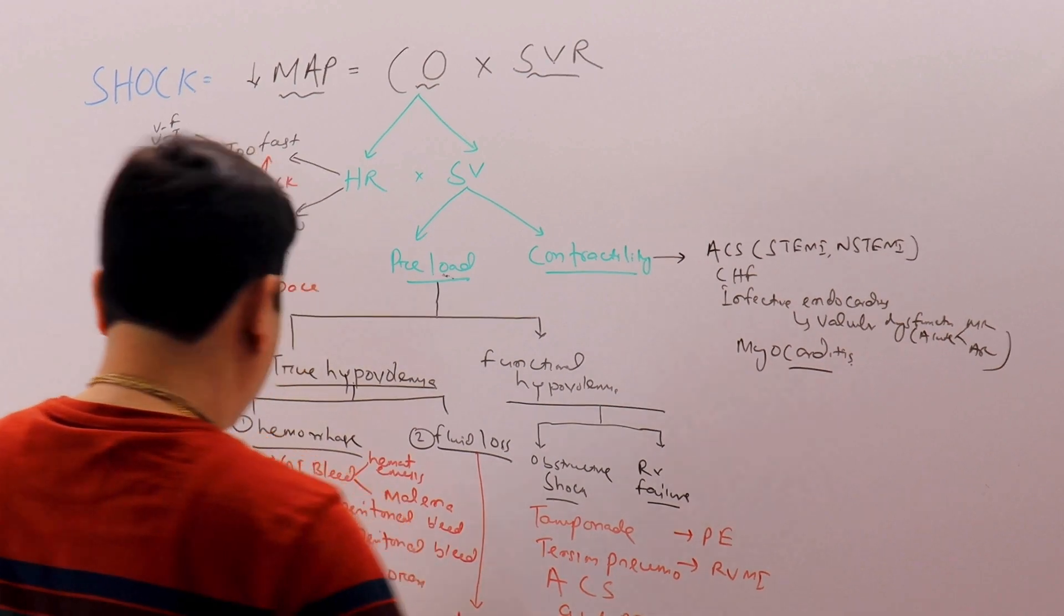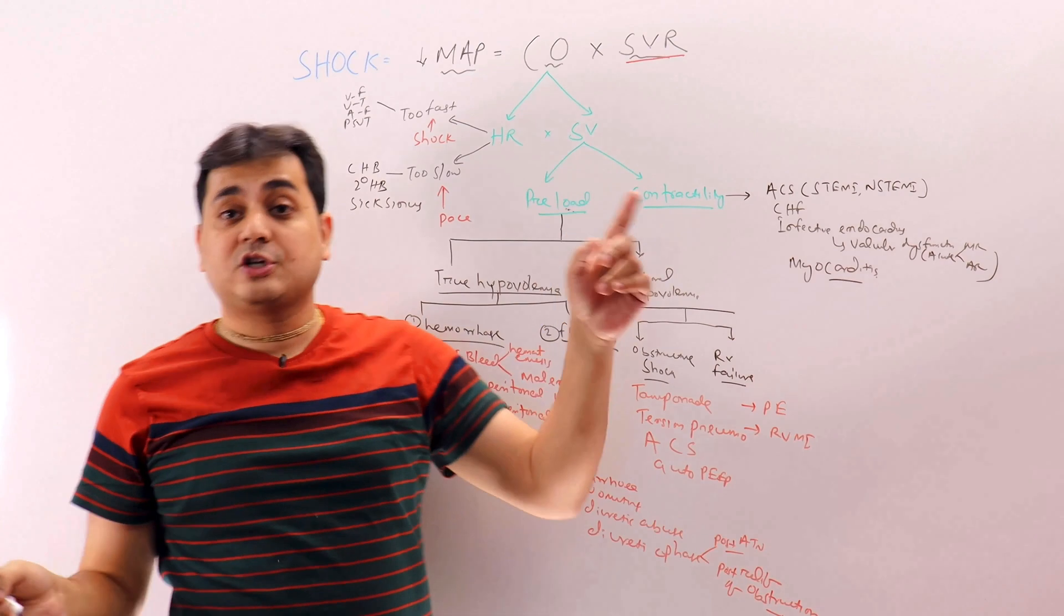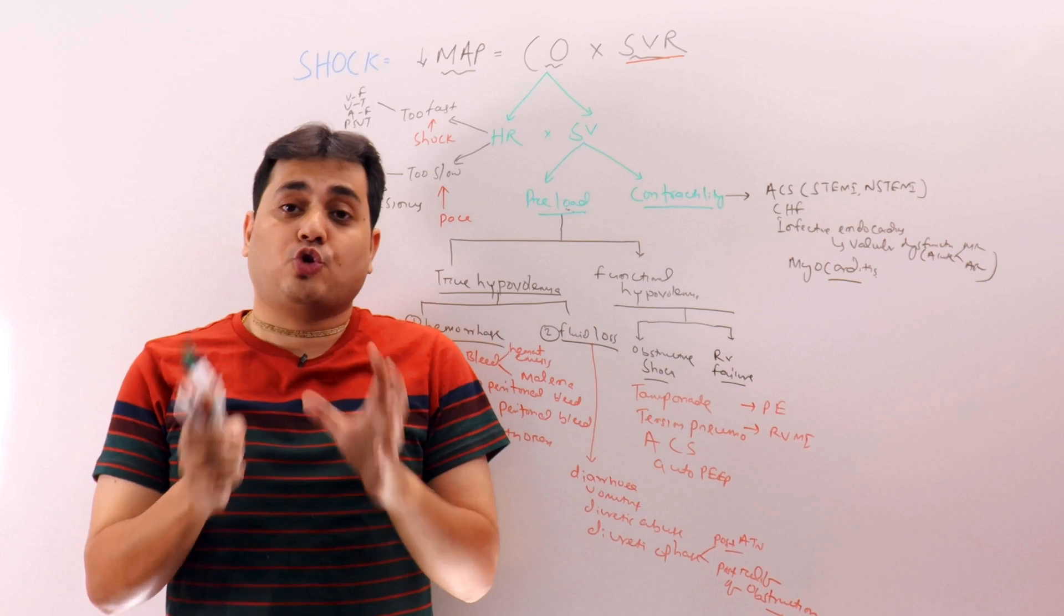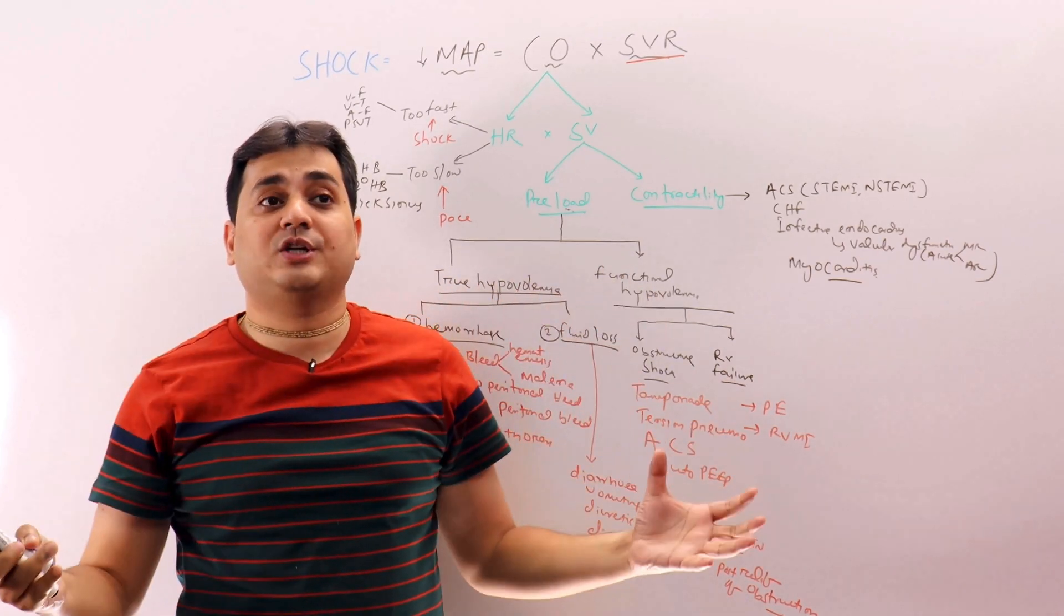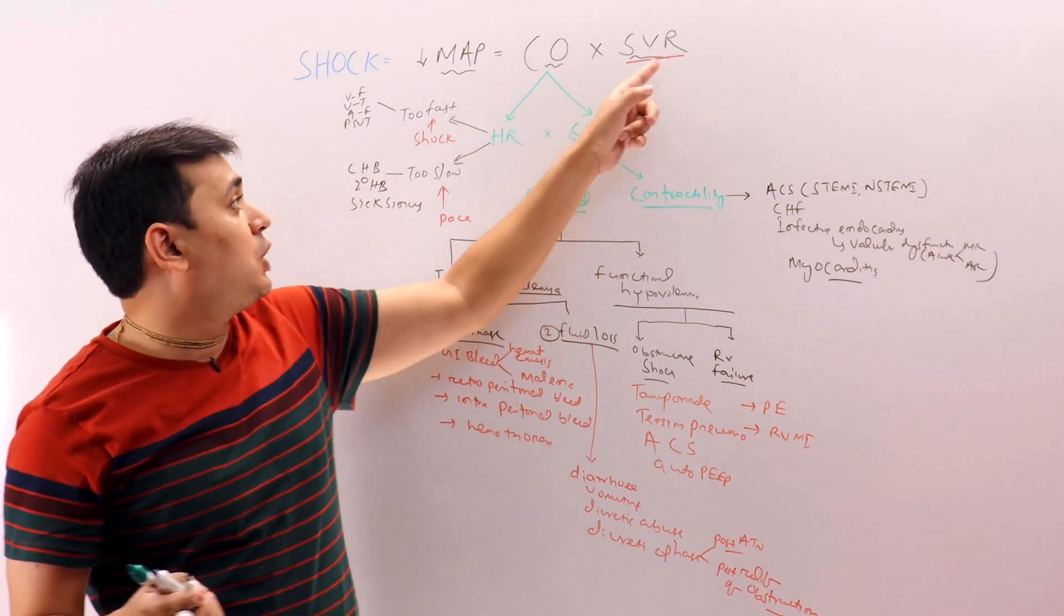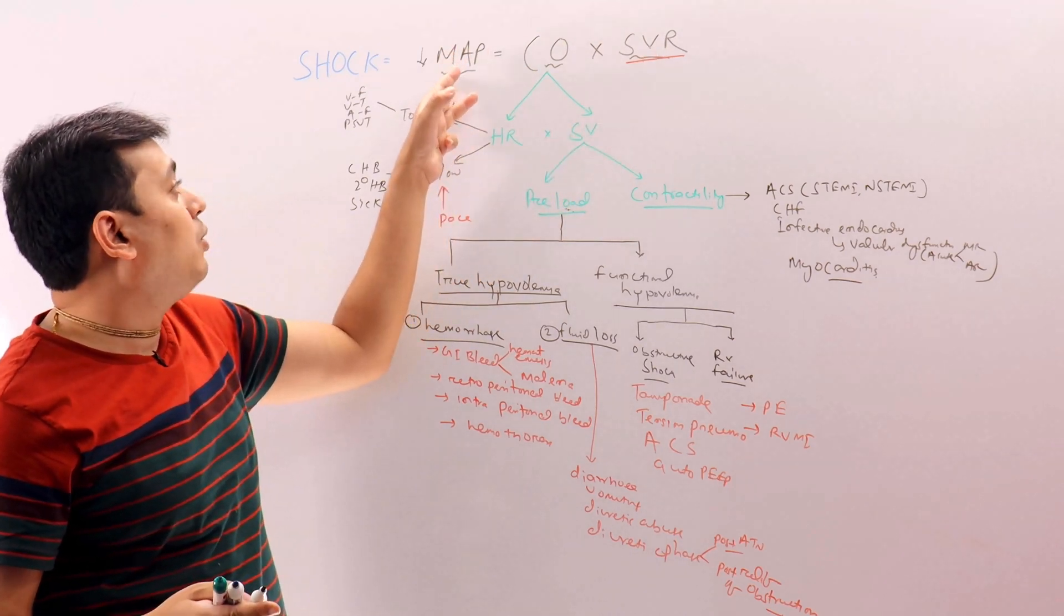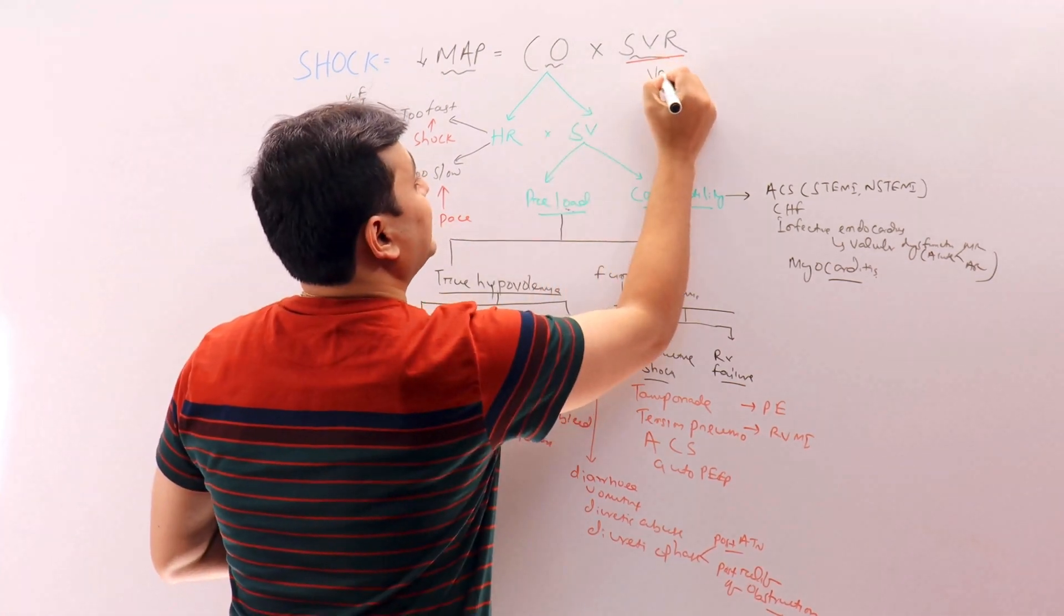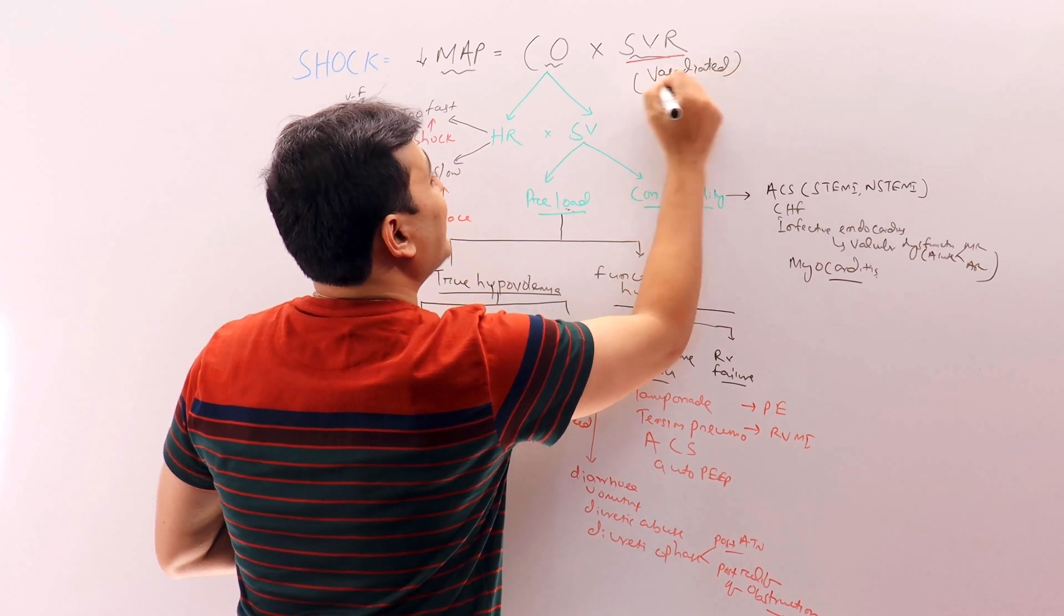So now next we have the systemic vascular resistance part. The systemic vascular resistance is actually the afterload of the patient, so the cardiac output or the stroke volume will face a resistance from the peripheral circulation - that's called systemic vascular resistance. So there will be situations when this systemic vascular resistance will be down, causing the BP to go down.